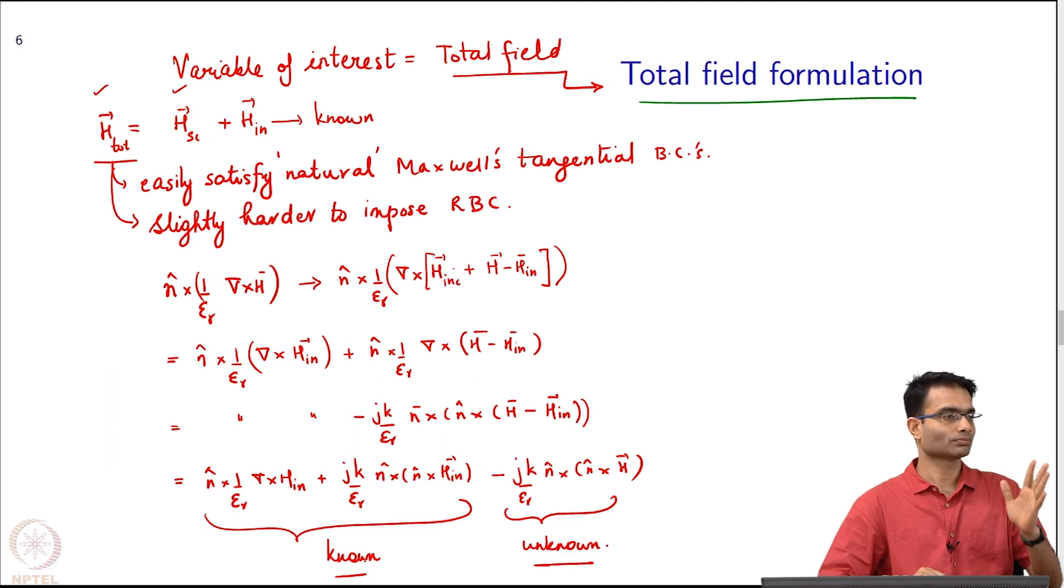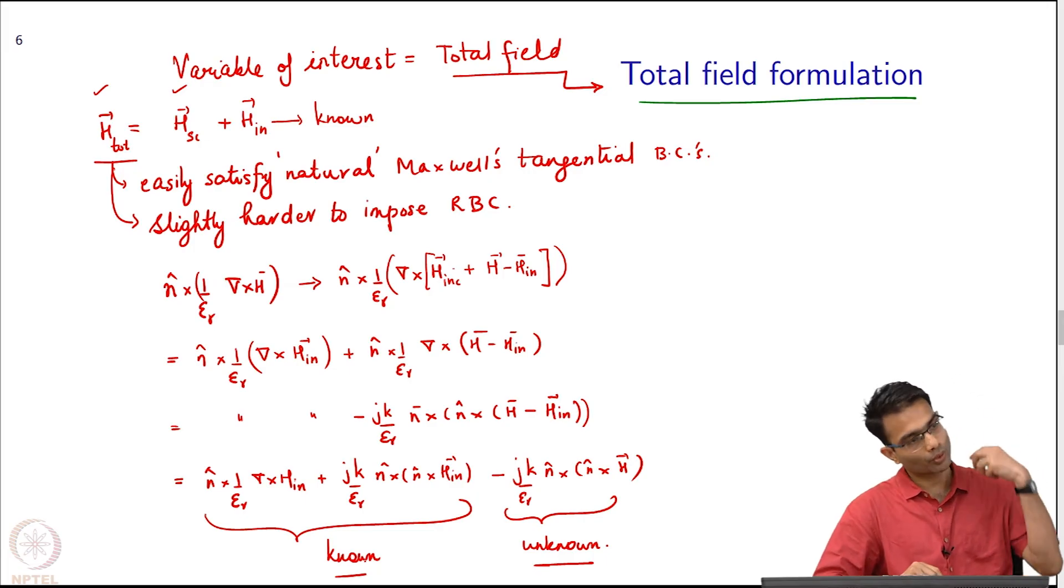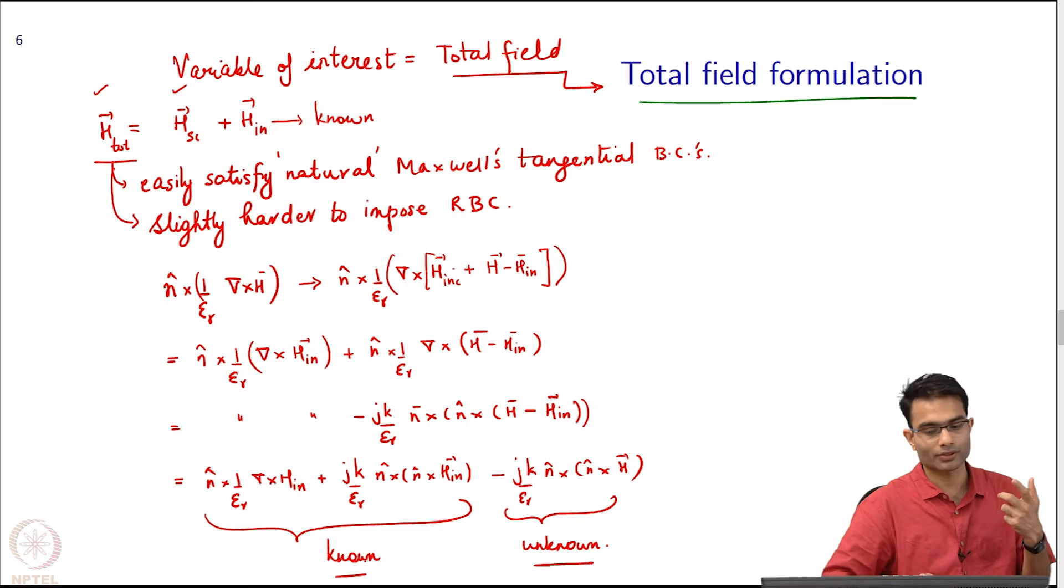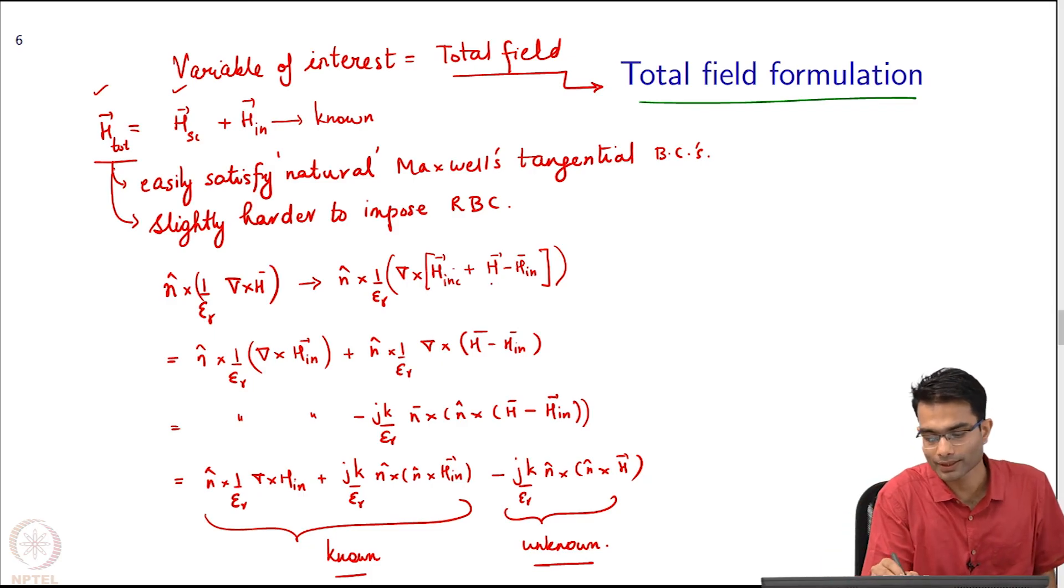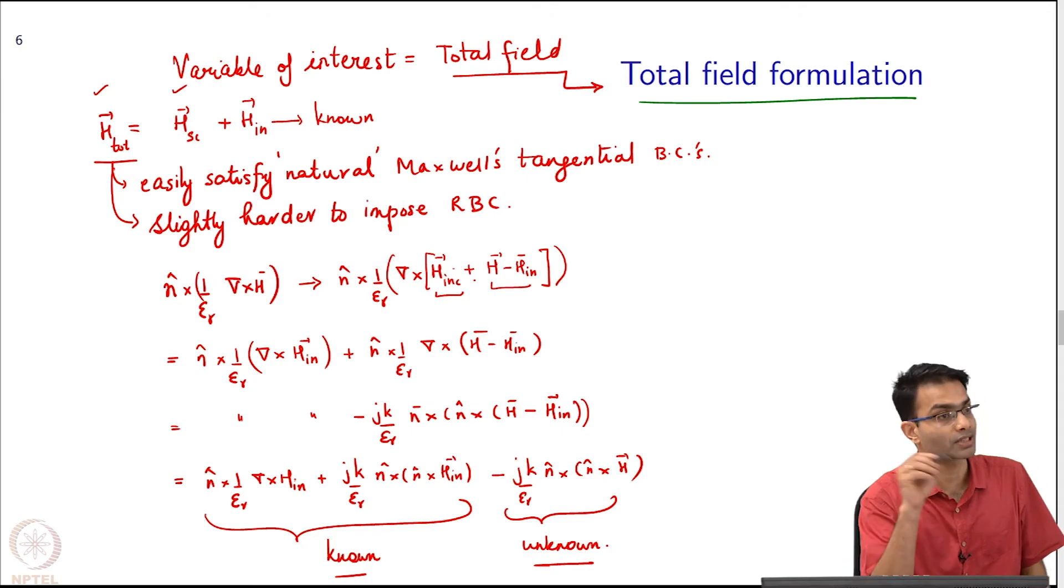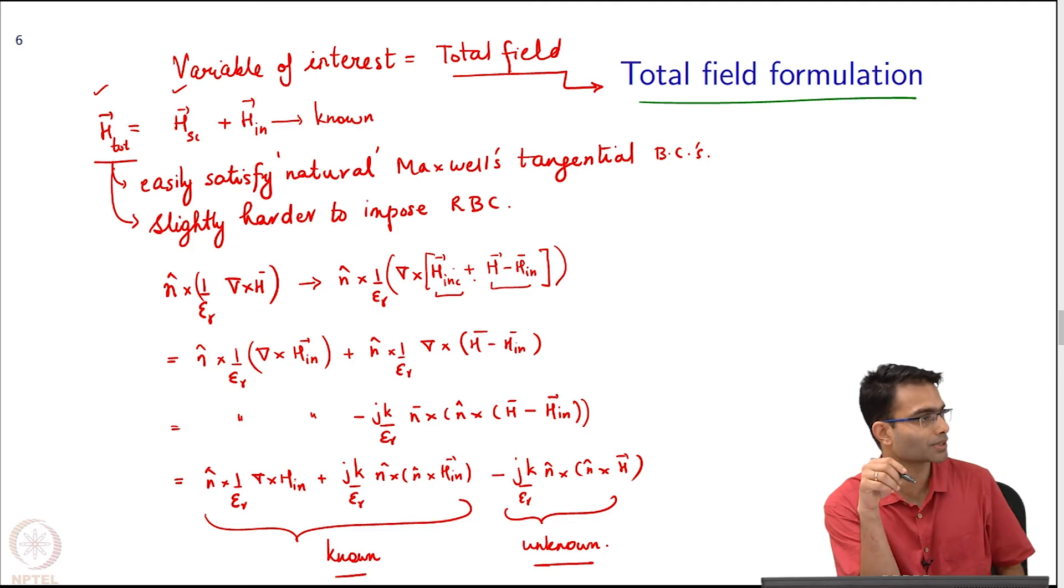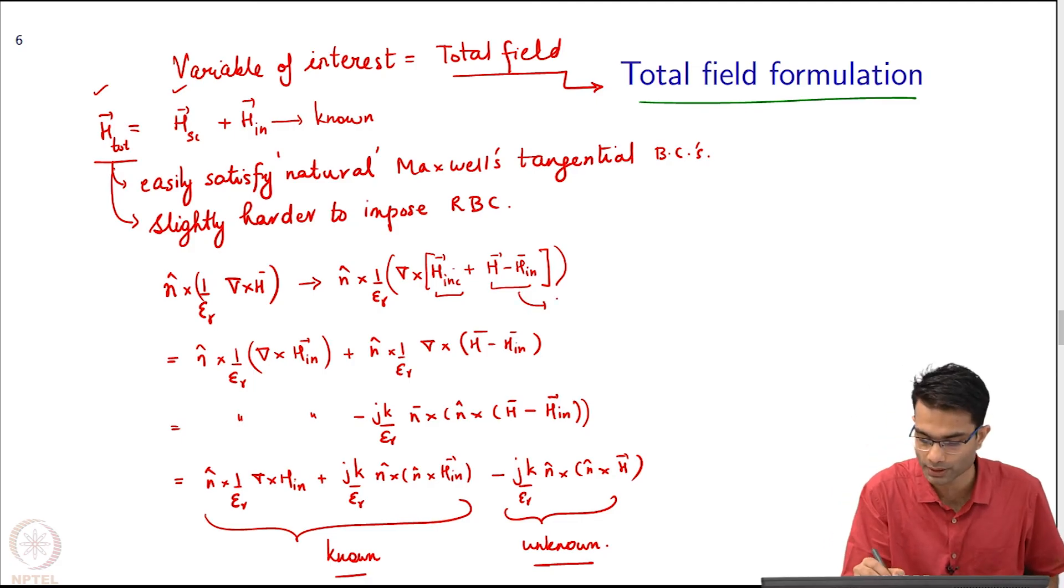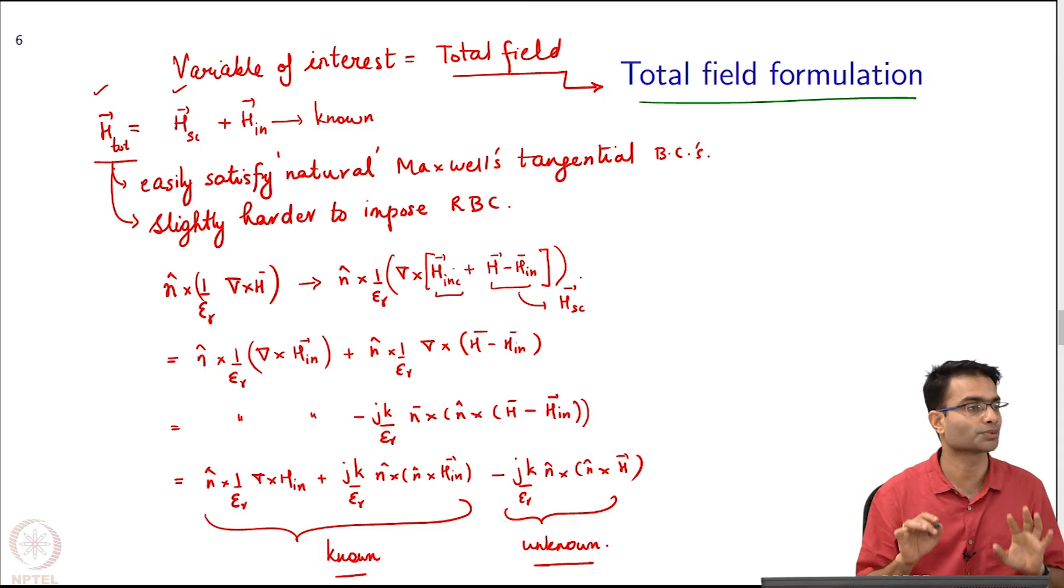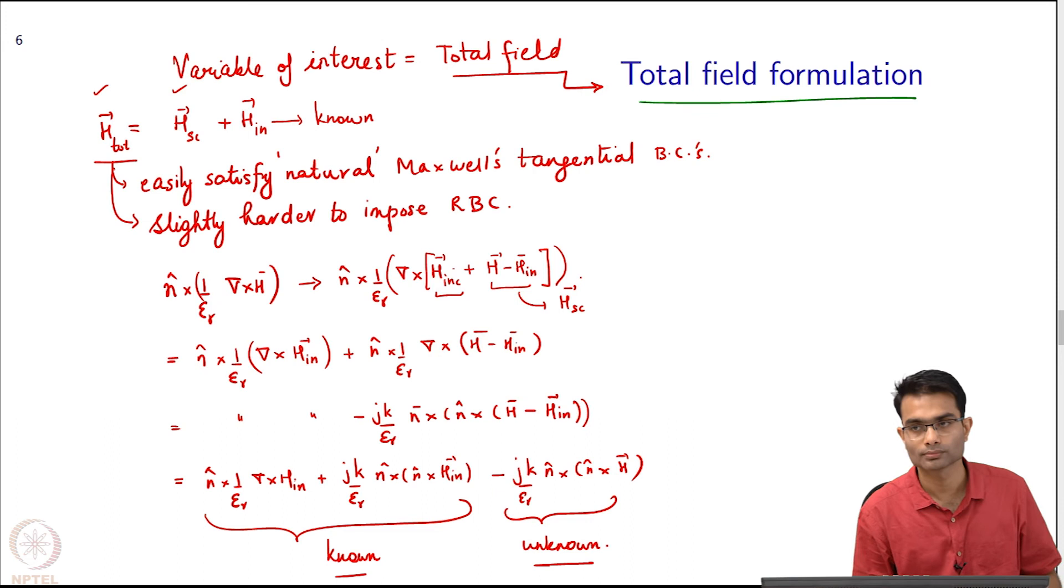The known terms for example, I know n, I know epsilon_r, I know h incident. So I can gather all of these known terms and they will become j k by epsilon_r n cross n cross h incident. These are the known terms and I am left with minus j k by epsilon_r n cross n cross h. This is just a fancy way of writing what we had already done in 1D.